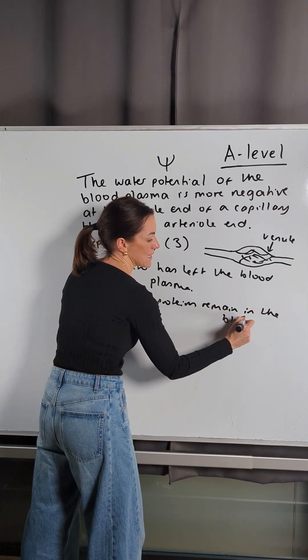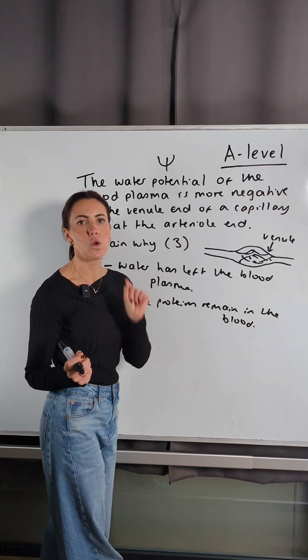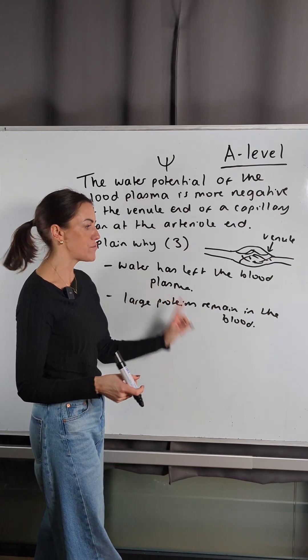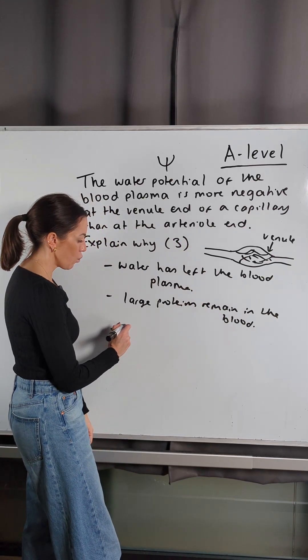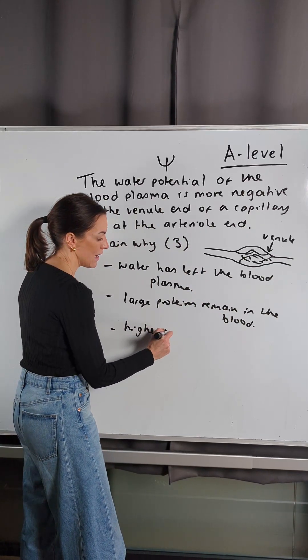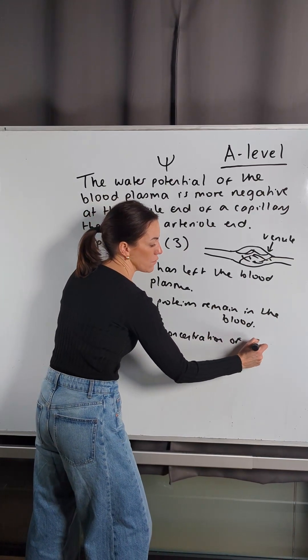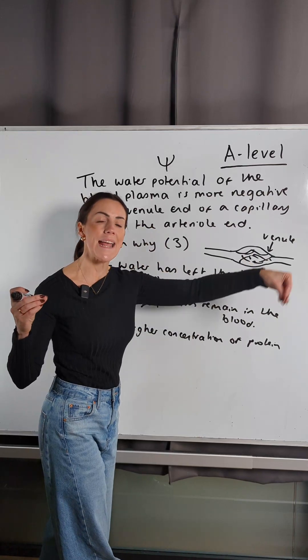But what remains? Water has left the blood plasma, but large proteins remain in the blood plasma because they are too big to pass through the walls of the capillaries, the endothelium. They are too large, so they stay in the blood, but lots of water has left.